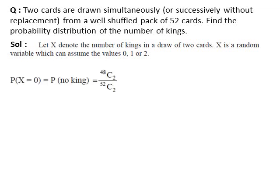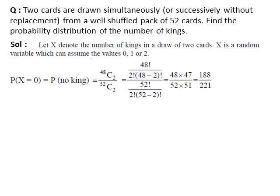P(x=0) is the probability of no king. Two cards can be drawn simultaneously in 52C2 total ways. As no king occurs, the favorable outcomes are 48C2. Therefore, P(x=0) = 48C2 divided by 52C2. Using the formula of NCR and simplifying, we get 188 divided by 221.